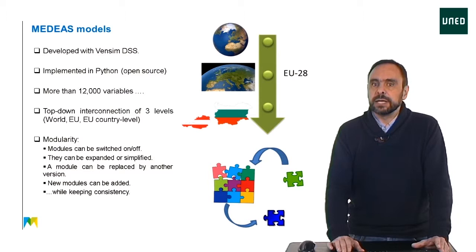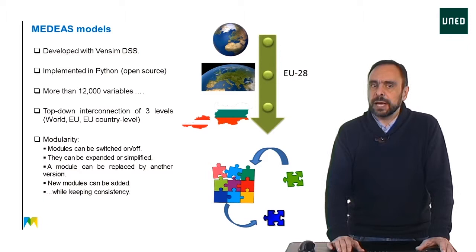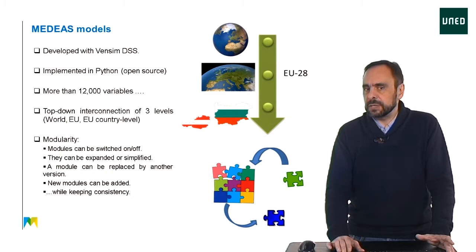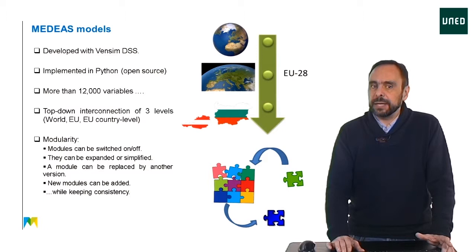In order to understand the model, it is necessary to have a general overview of it. In later topics, each of the parts of the model will be described. The MEDEAS models have been initially programmed with the Vensim software and subsequently translated into Python. Therefore, there are two versions available. In order to use the Vensim version, it is necessary to have the Vensim software in one of its versions, Reader or DSS. However, the Python version is open source and does not require any commercial software.